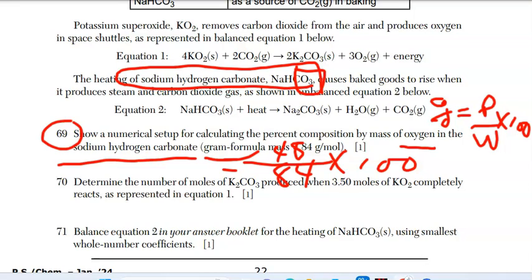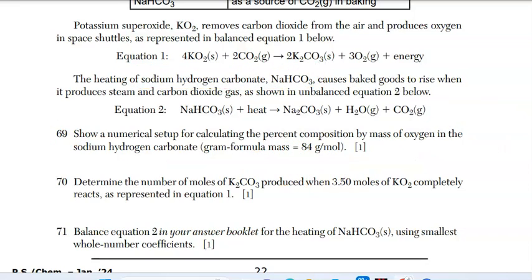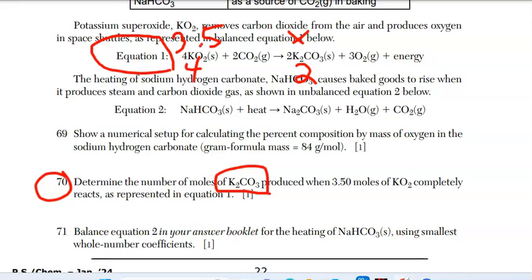We're going to do a bonus question, and that's question 70. For question 70, it says, Determine the number of moles of K2CO3 produced when 3.5 moles of K02 completely reacts, represented in equation 1. What I like to do, these are mole-mole problems, put the 3.5 above, in this case, the K02. We're looking for the K2CO3 moles. We're going to put an X there. Now, with that, you have your coefficients, which is your ratio. There's a 4 here in front of the K02 and a 2 in front of K2CO3. And what we've just set up now, folks, is a nice proportion.